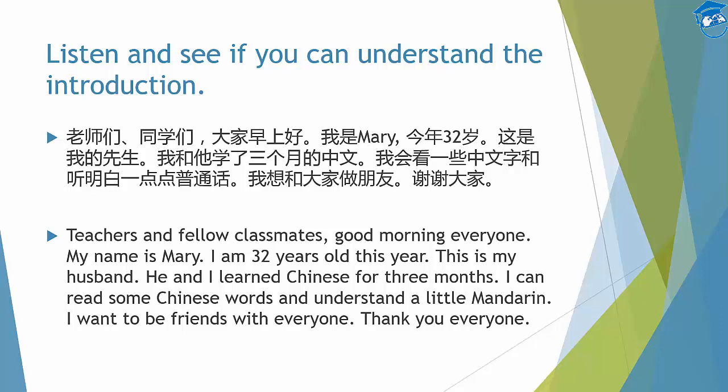In Chinese, it's much more common to say 我和他, 我和你, rather than the other way around — whereas in English it's more common to put 'I' last. You should be very familiar with this grammar structure because I have explained it to you before. 三个月 is like an adjective, so it is placed before 中文 with 的 in between. I can read some Chinese words and understand a little Mandarin — 我会看一些中文字. Here 会 is translated as 'can'.